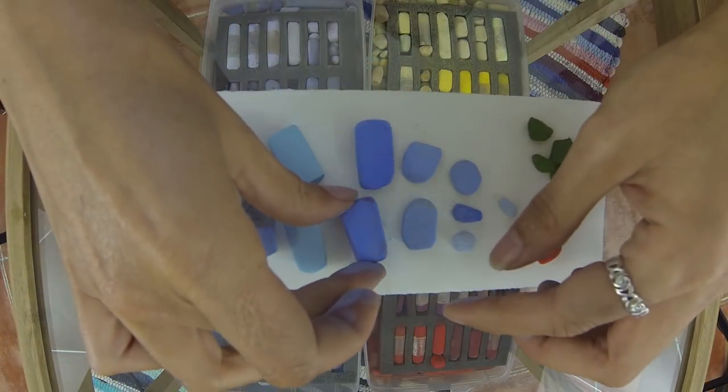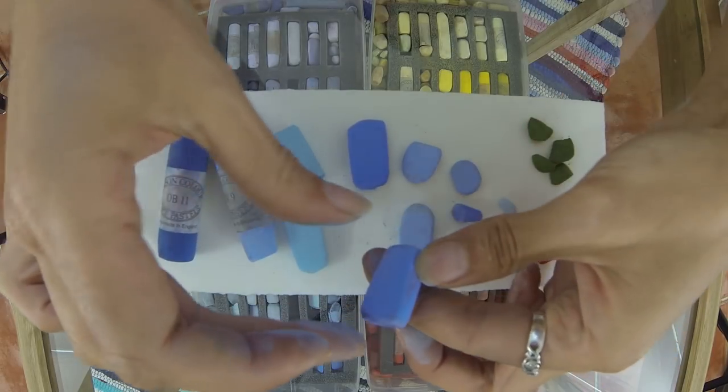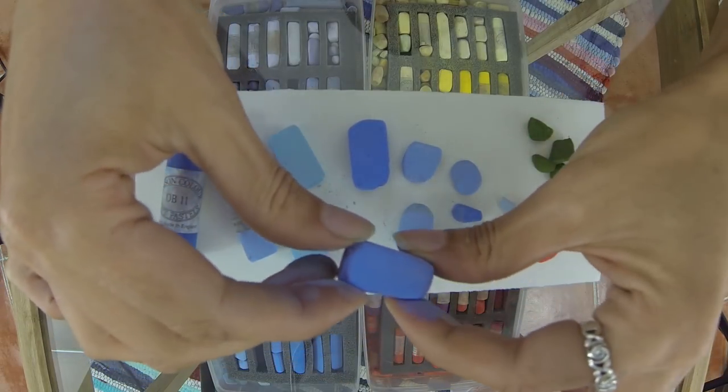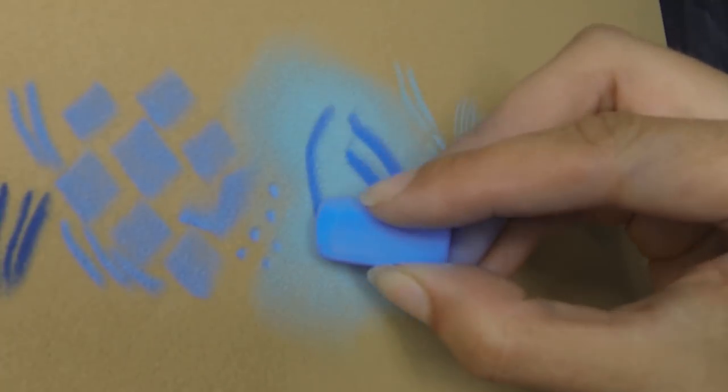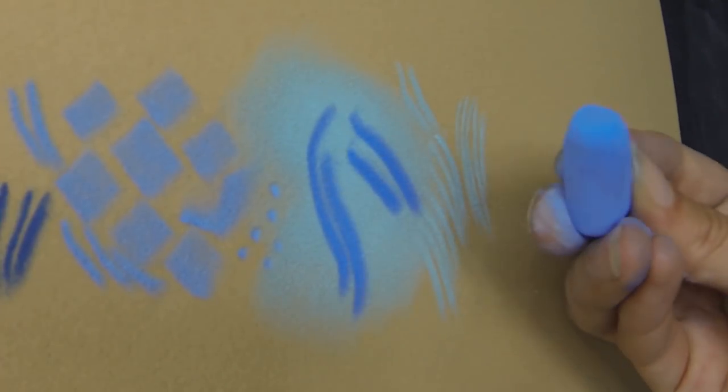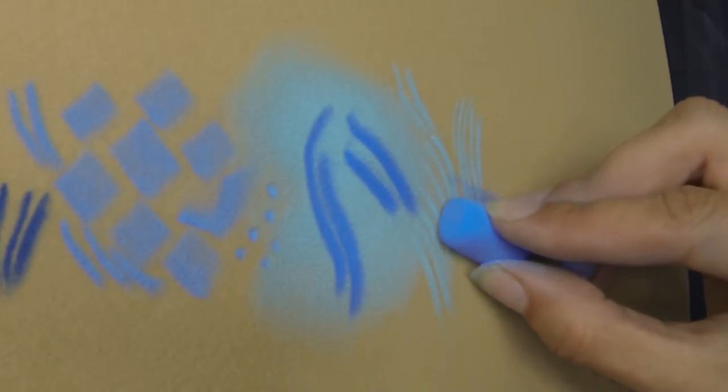This turns into these softer edged pieces. Lots of nice flat lines. I can still make nice big marks with this too.